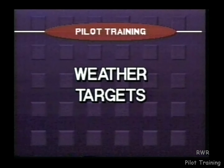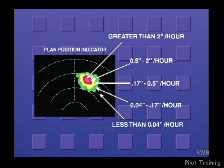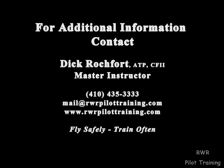As you observe weather targets on the radar display, you see them in their broadest dimensions. The higher the rainfall rate contained within a storm, the greater its ability to reflect maximum radar energy. When the aircraft's radar is in the weather mode, it is calibrated to display different rainfall rates in the following colors: black indicates very light or no rain; green is 0.04 to 0.17 inches per hour, which is light rainfall; yellow is 0.17 to 0.5 inches per hour, or medium rainfall; red is 0.5 to 2 inches per hour, indicating very heavy rainfall; and magenta is greater than 2 inches per hour, or intense rainfall.